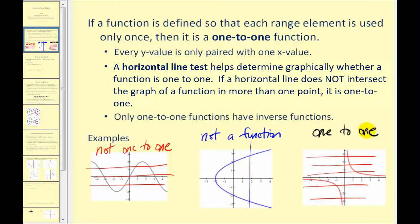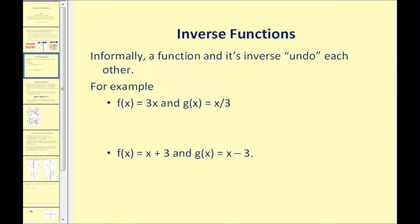This means this function does have an inverse function. Informally, a function and its inverse undo each other. For example, f of x equals three times x and g of x equals x divided by three. Multiplying by three and dividing by three are opposite operations and therefore undo each other. Therefore, f of x and g of x are inverses of one another.